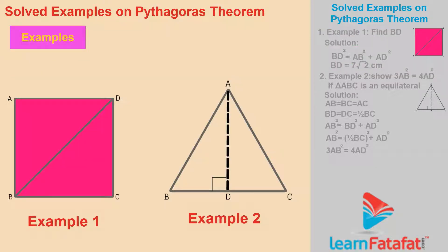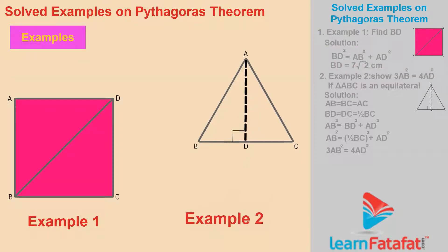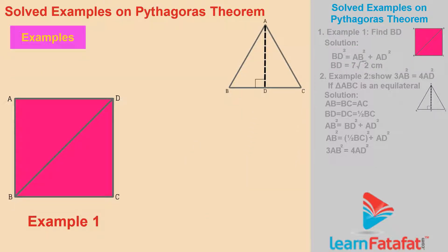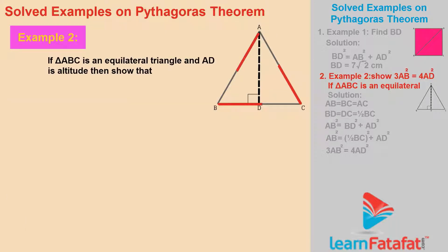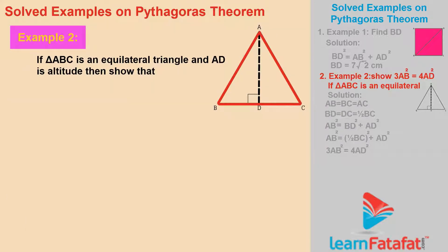Example 2. If triangle ABC is an equilateral triangle and AD is the altitude, then show that 3AB² = 4AD².